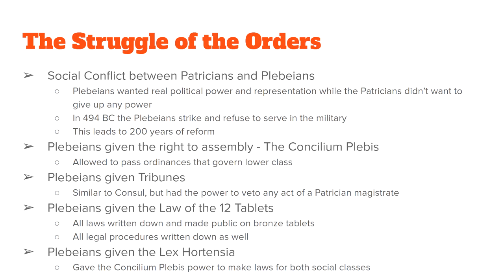The Plebeians were also given their own set of magistrates, known as tribunes. They did basically the same thing as a consul, except they were only supposed to govern the lower class. Tribunes were given extra power: they could veto — or say no to — anything that a Patrician magistrate did. So if a quaestor, censor, or praetor said something and the tribune disagreed, the tribune could overrule it.